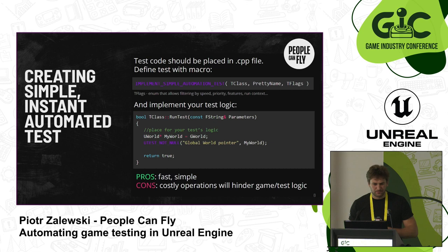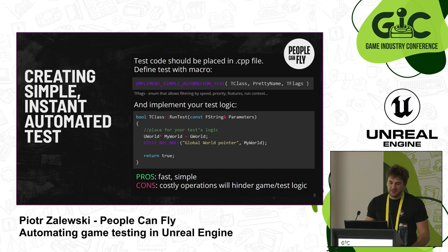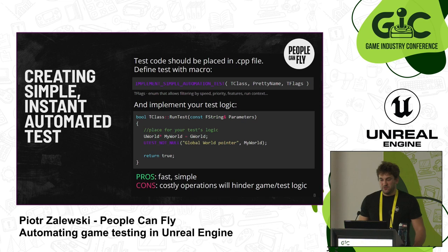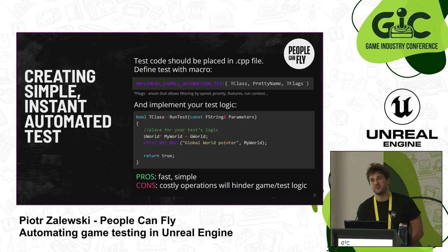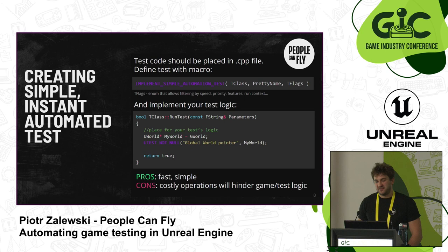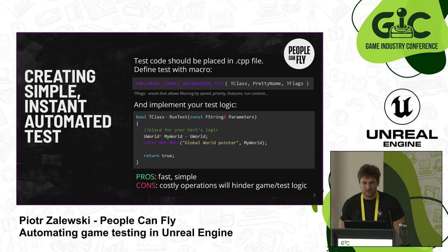Now a little bit of coding. To create a simple so-called instant automated test, meaning the whole logic of the test is handled in one call, you have to do at least two things. Epic suggests you put your test source code in a .cpp file, suffixed with 'test', so we know this file contains tests for your functionality. First, you have to use the Epic-provided macro called IMPLEMENT_SIMPLE_AUTOMATION_TEST. This macro takes three arguments: the class name under which the program will recognize the test; the pretty name under which you will issue and see the test in the editor frontend; and a combination of enums specifying what type of test you are creating.